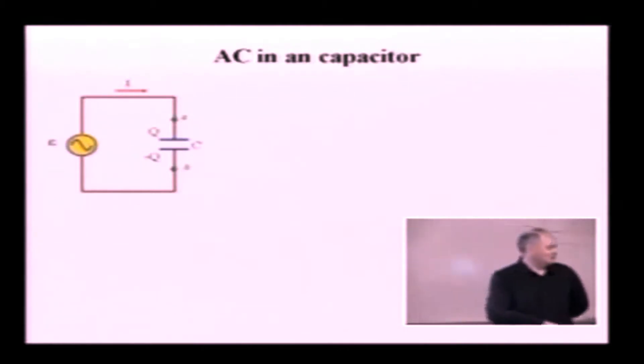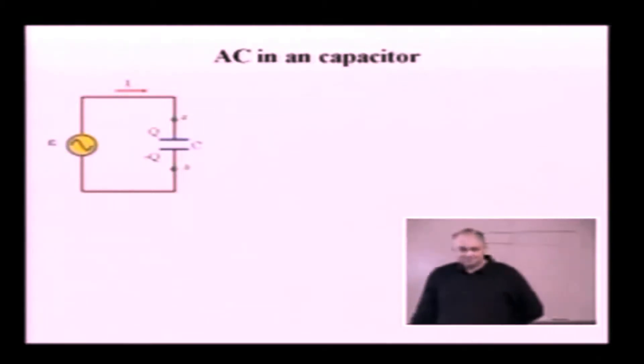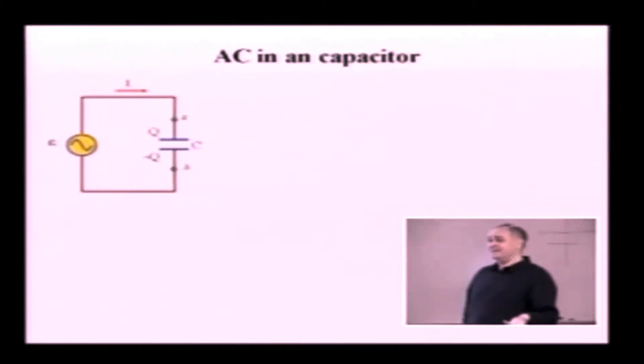Zero. Very good. How did you get it? Because we have to take derivative of voltage, correct? Because current flowing through the capacitor is equal to the rate at which charge on the capacitor varies. And if we keep constant voltage across the capacitor, charge on the capacitor is going to be constant as well. Alright.